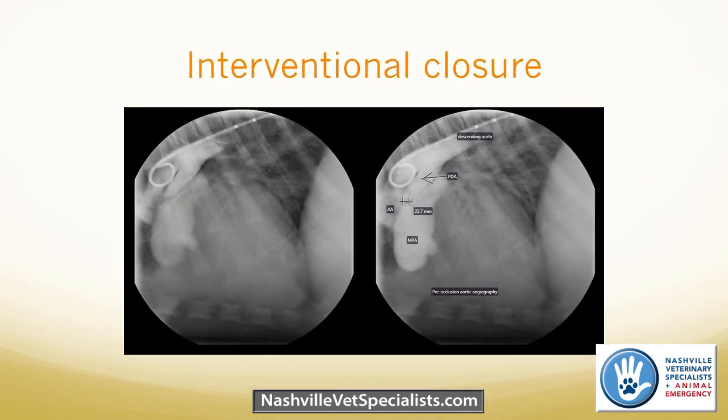Everything is done under fluoroscopy — live X-ray. We do an angiogram beforehand to highlight the ductal anatomy using a pigtail catheter in the aorta to deliver contrast. You can see the aorta highlighted, then the ductus highlighted nicely, and then the pulmonary artery. We measure the minimal ductal diameter — the narrowest point before the ductus enters the pulmonary artery — and that measurement determines what size ACDO to use.